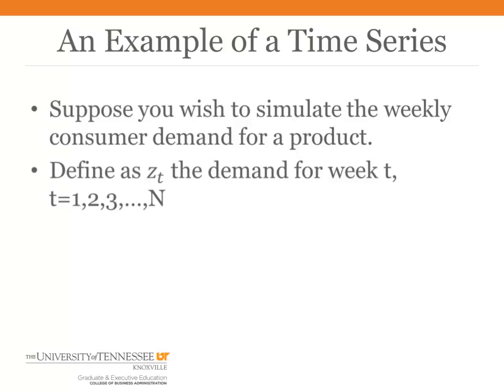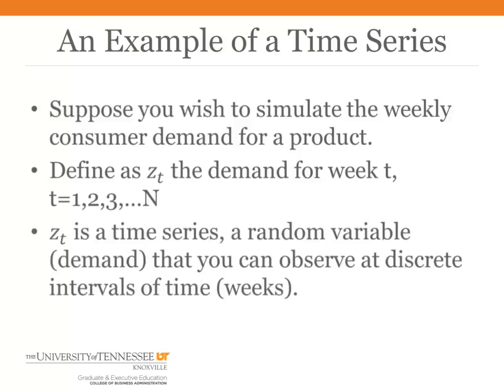Let T denote the week number, starting with week 1 and going through week N. In the example we are going to introduce, we will let N equal 50, or 50 weeks. And for each week, we define a random variable Z sub T that denotes the demand. Z sub T is a time series — a set of random variables occurring at discrete intervals of time. We call the underlying process the time series, and we call a particular sequence of numbers that the process generates an observation of the time series, or the data generated by the time series.